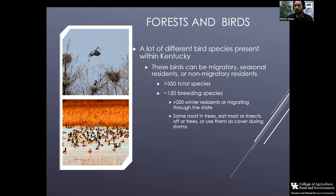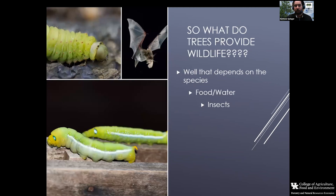Trees may also be utilized as a food source — maybe the actual mast produced by the trees, as well as insects that are using the tree for their own food or cover. A diversity of tree species also supports a diversity of insects, which can then provide and support more wildlife species. So having a diverse forest or diversity of trees in your yard helps provide ample food via the insect layer and trophic levels.